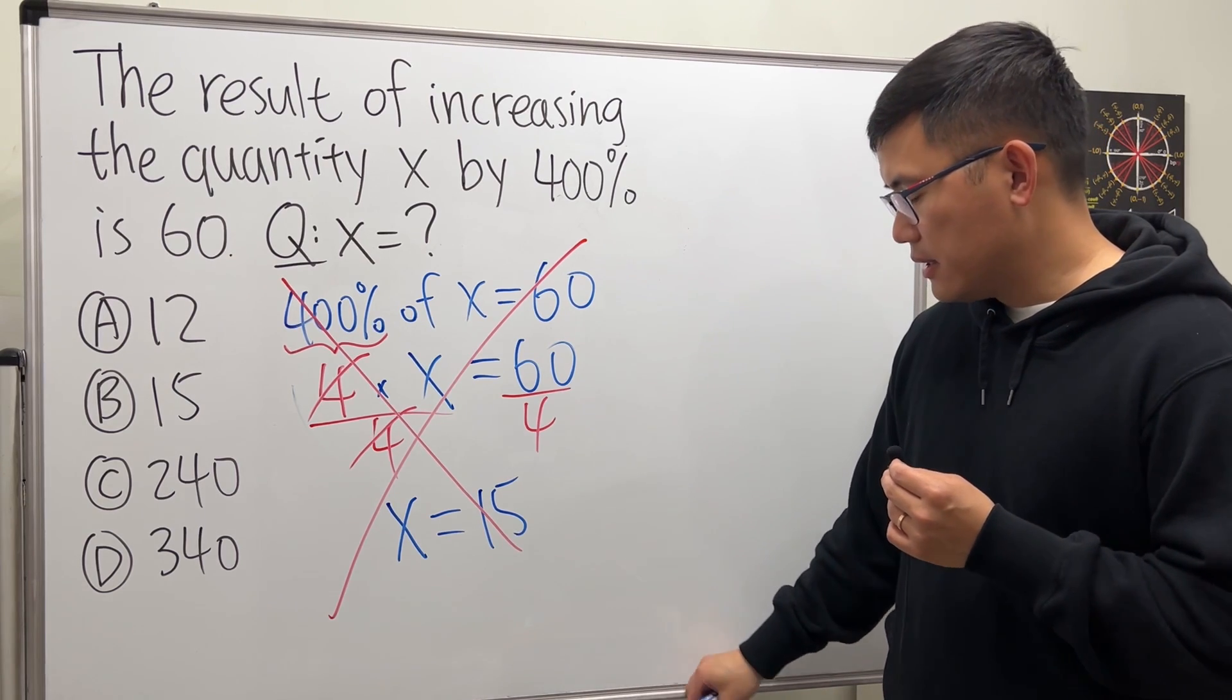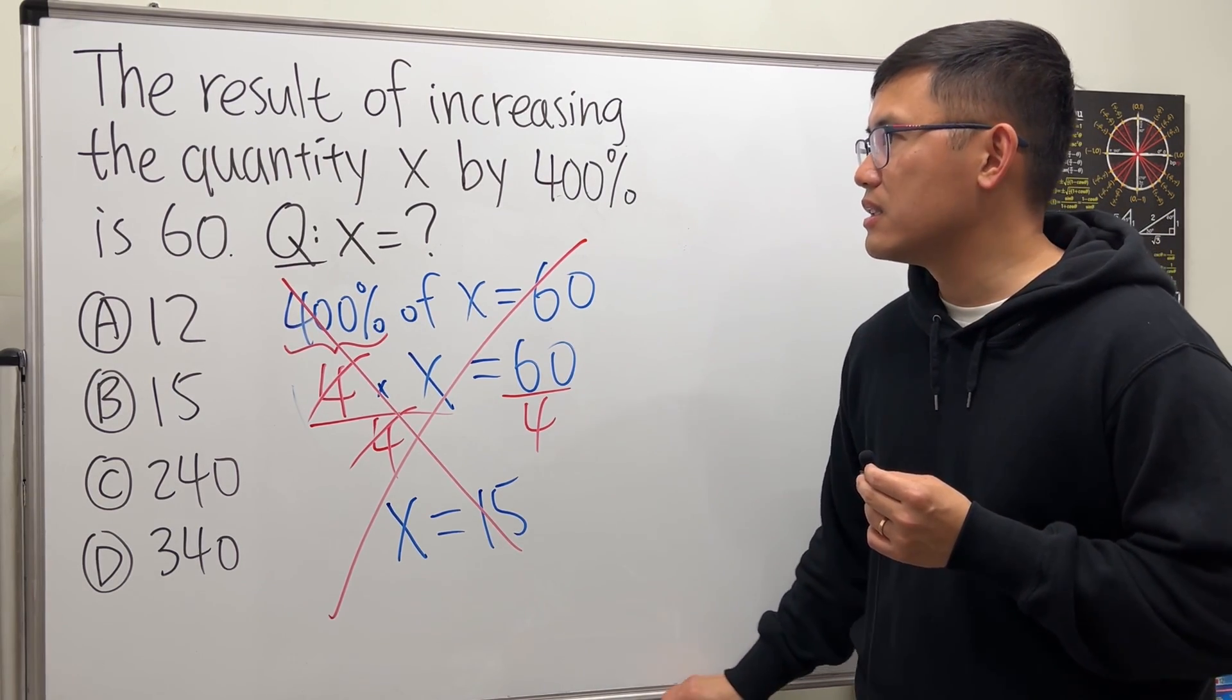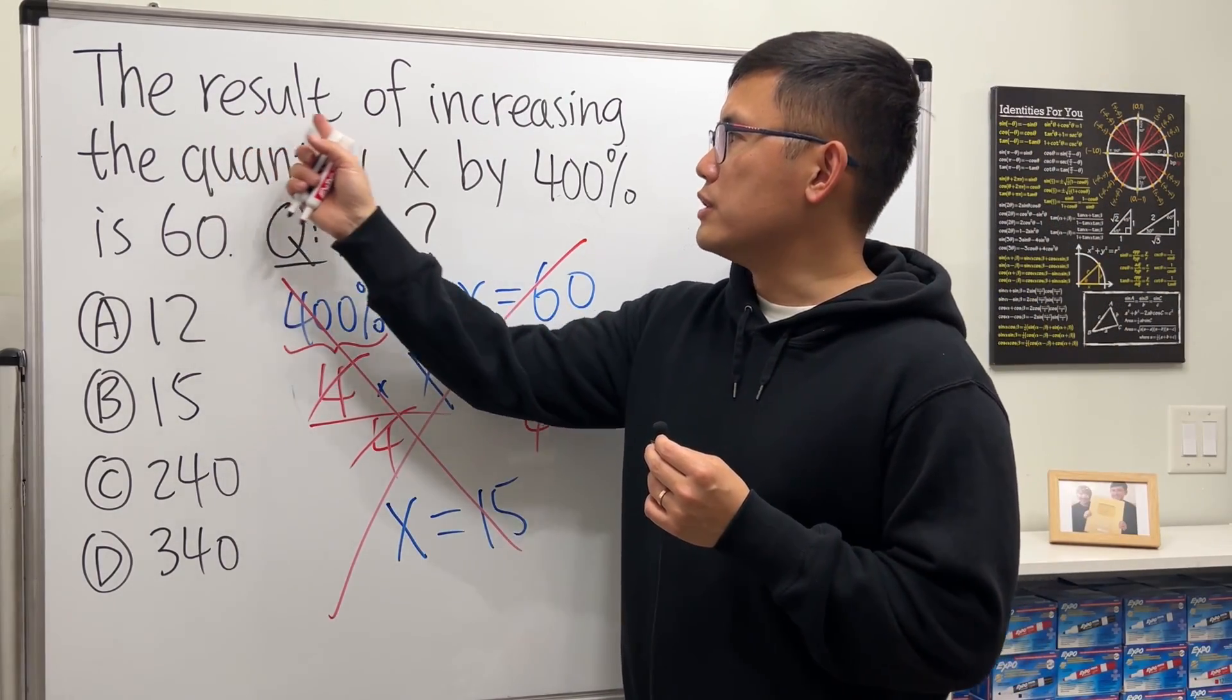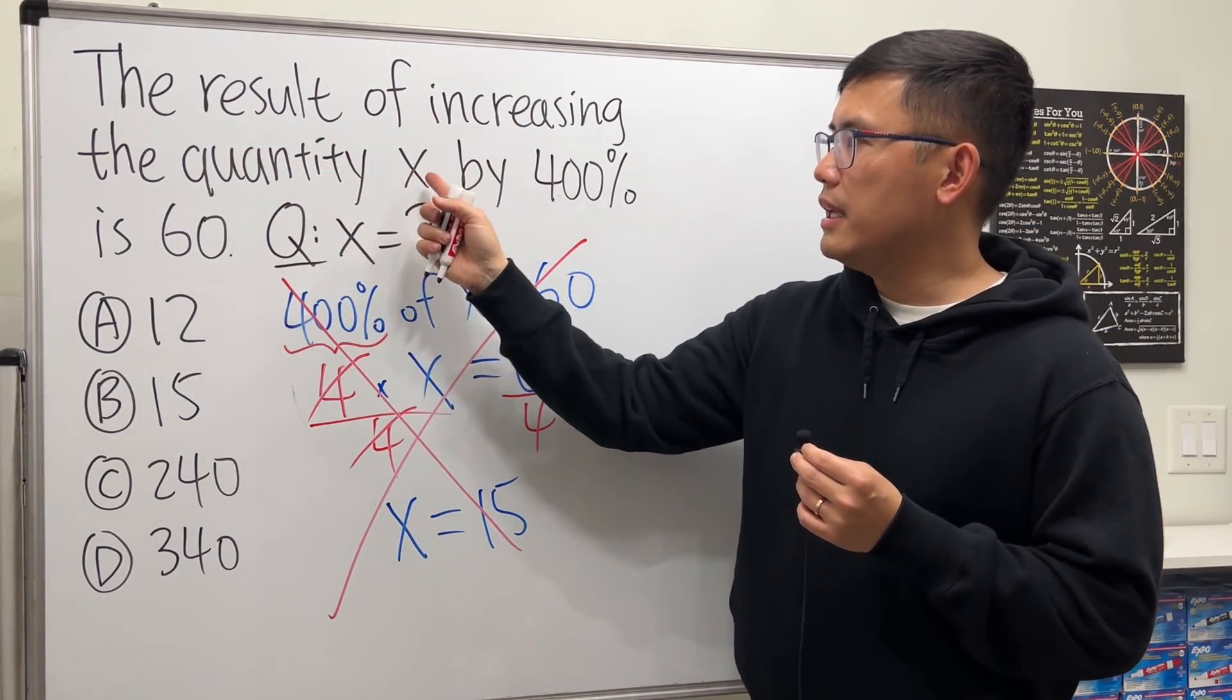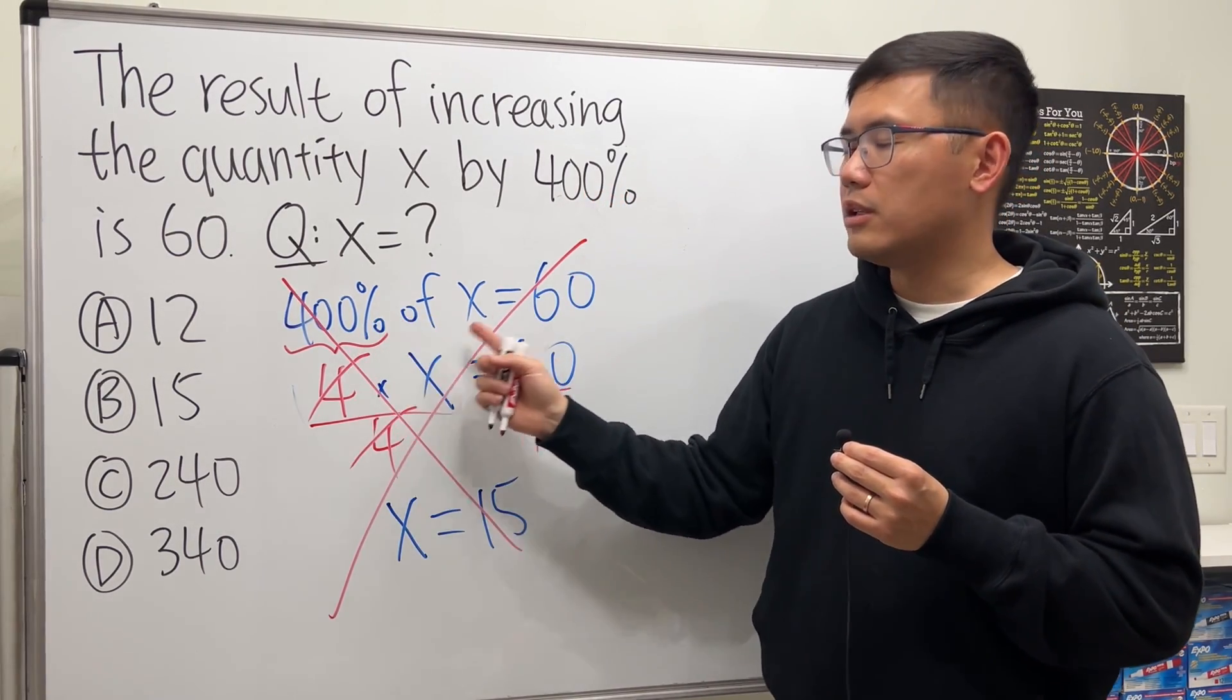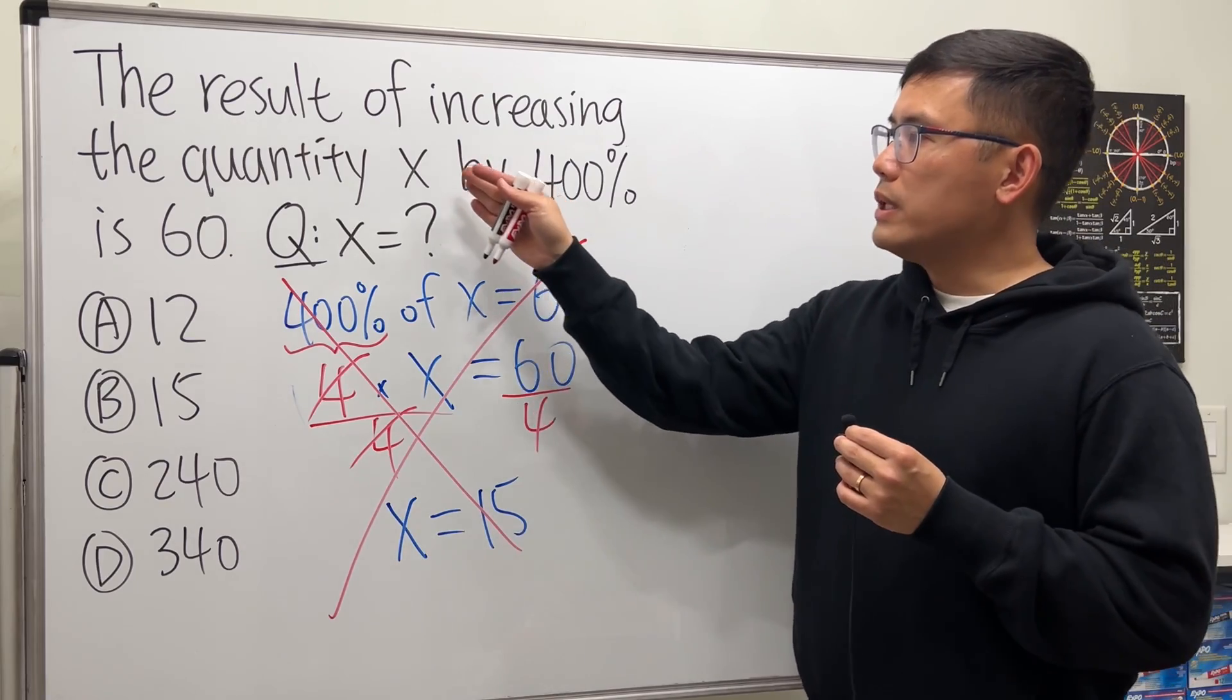It's incorrect because of the wording. Be really careful with it. It says the result of increasing the quantity x by 400 percent. This is not the same as 400 percent of x.